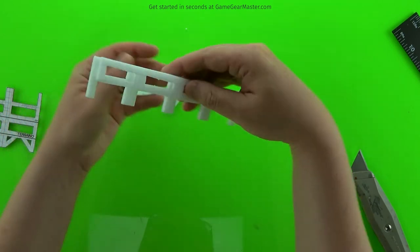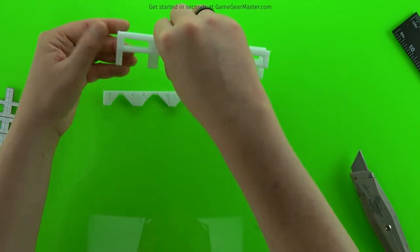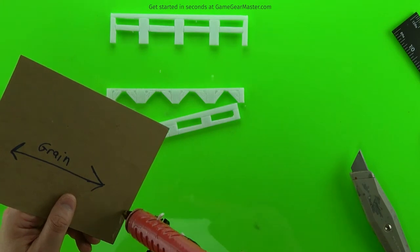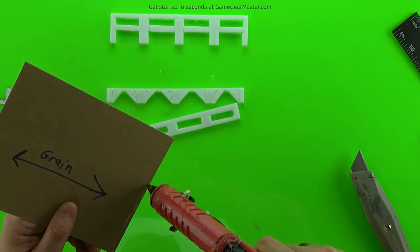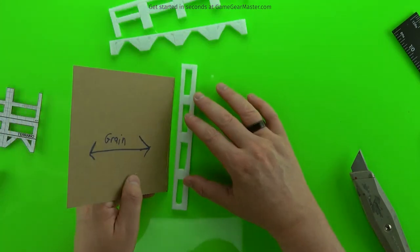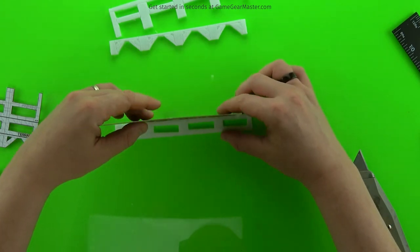You want to have the wood texture facing out on the front and the back. We'll take our piece of cardboard with the wood grain perpendicular to the railing, and we'll use our work surface to set that in place.